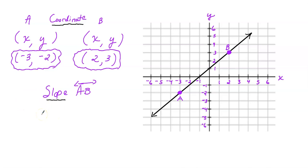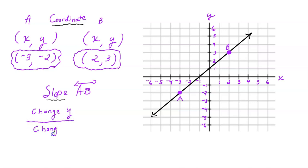Now let's go to slope — this is where the confusion comes in. Slope measures steepness, not direction necessarily. To find the slope, you take the change of y divided by the change in x. Some people call this the rise divided by the run — that's another way to look at it. Your change in y is your rise and your change of x is your run.